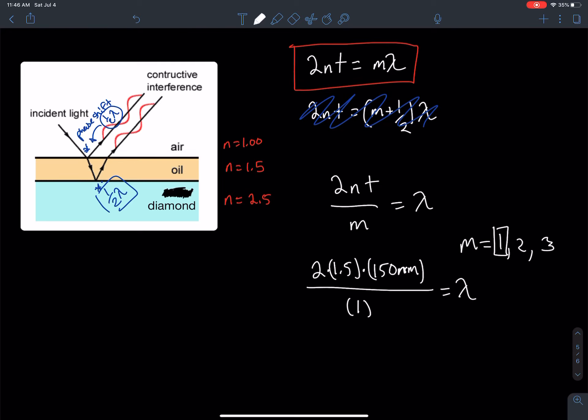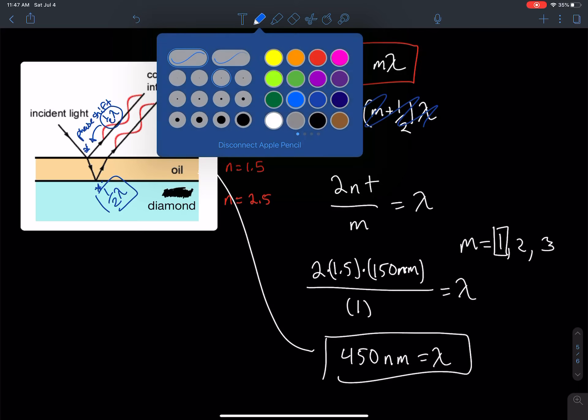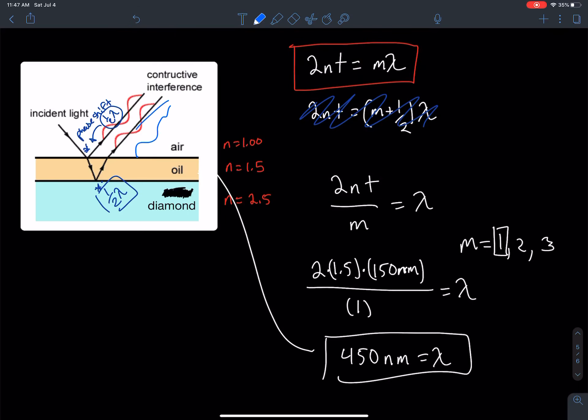In that case, 2 times 1.5 times 150 would give me 450 nanometers, which is going to be the wavelength of light that is going to be scattered off of that. So it's going to be a blue wavelength of light that we're going to be able to see with our eyes.